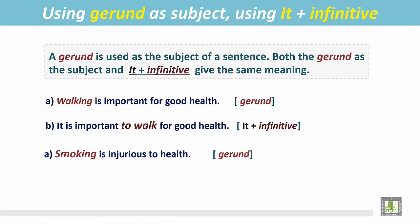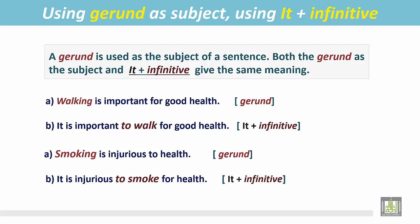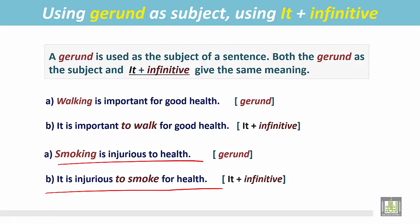See another pair of examples. 'Smoking is injurious to health.' In this sentence the verb smoke is with -ing: smoking, and it is the subject — the noun form of the verb, which is the Gerund. The other sentence is 'It is injurious to smoke for health,' where we find 'to' plus the simple form of the verb — an infinitive.